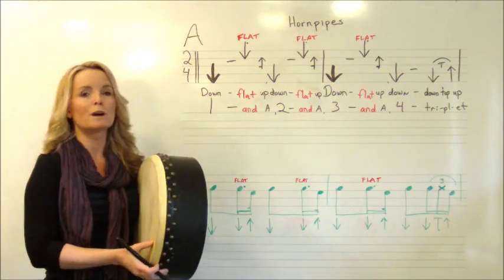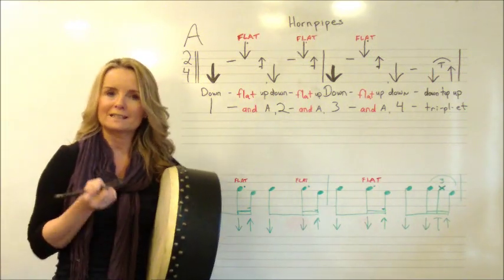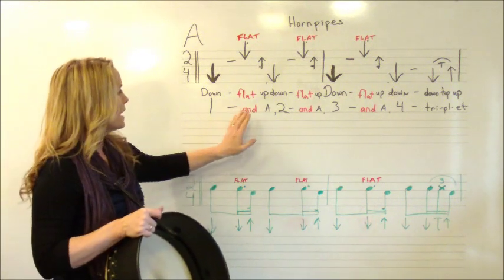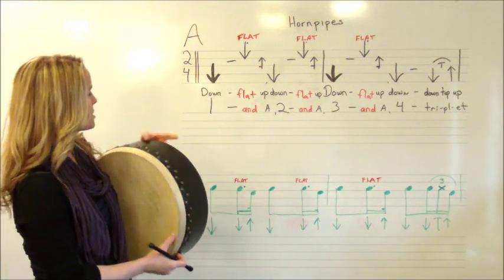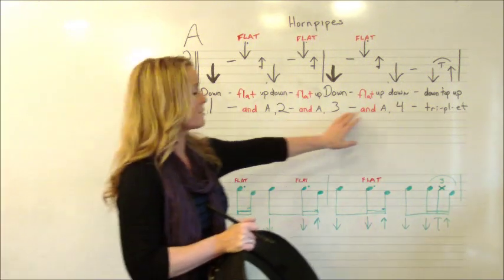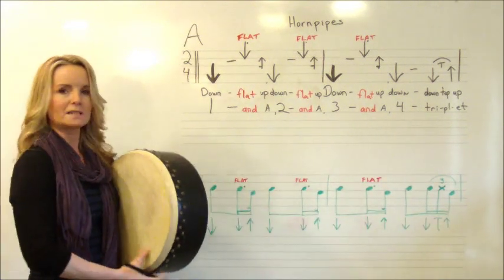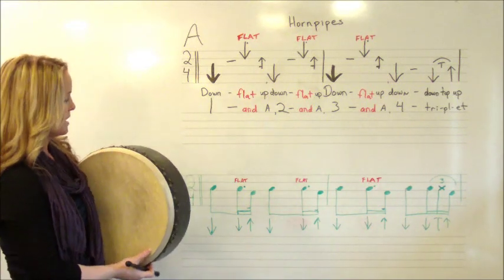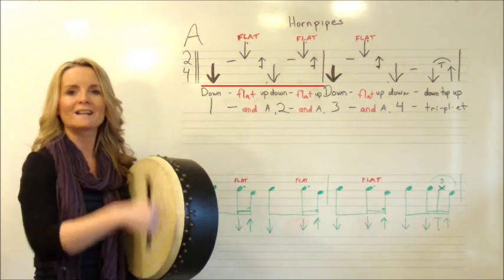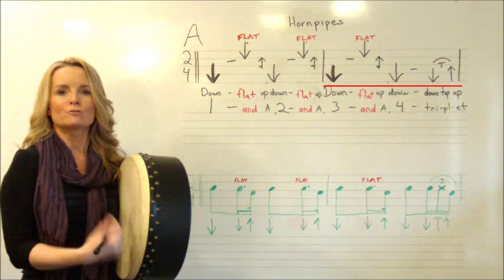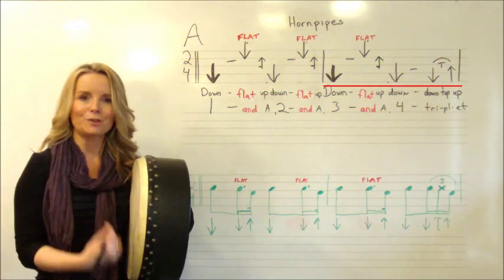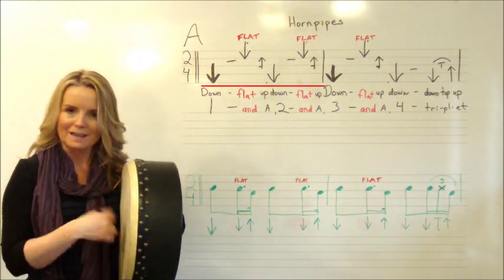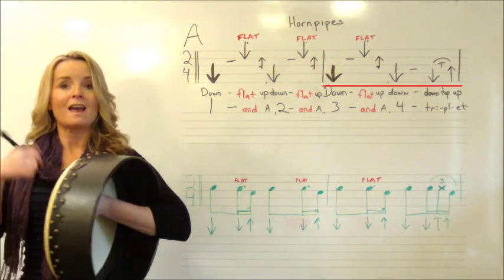Let's try saying the next count of one and a two and a three. Hopefully you can feel that skippiness, that liveliness to the hornpipe when you're saying it. It's that little one and a two - that 'a two' is quite quick. Also, every time we say one, two, three or four, we're going to be on that nice low deep bassy down. And when we say 'and', we're going to be going flat with our hands and coming out to the front part of the drum. Ready? One and a two and a three and a four, triple it.